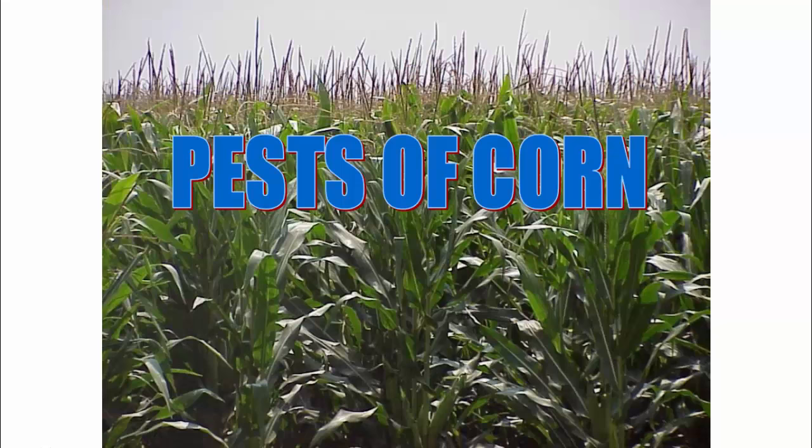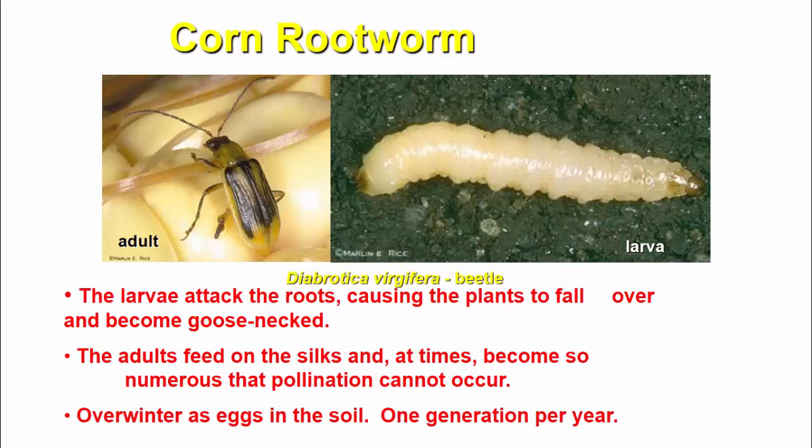First of all, pests of corn. Which pest in corn? First of all, corn rootworm.